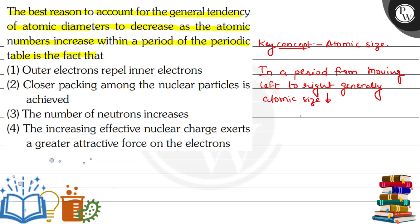Generally atomic size decreases. Why does it decrease? Because the same valence shell exists. Because the same valence shell is there, and the nuclear charge keeps increasing, so attraction of electrons to the nucleus also increases.